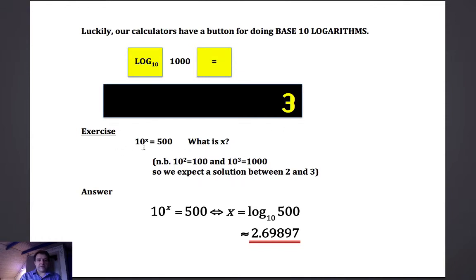Here's another example: 10 to the power of x is 500. What is x? There's no simple easy power that we can raise 10 to and get 500. We know that 10 to the power of 2 is 100 and 10 to the power of 3 is 1000, so x is somewhere in between the two of those. 10 to the power of something between 2 and 3 is going to give us 500, so we expect a solution between 2 and 3.